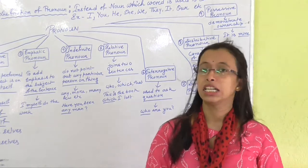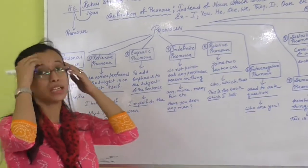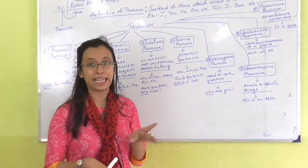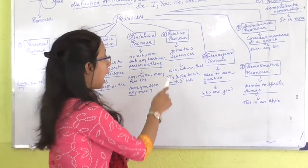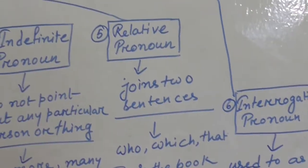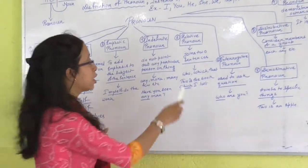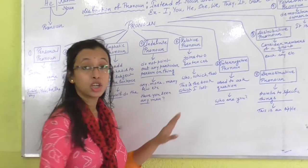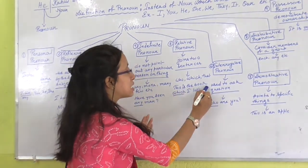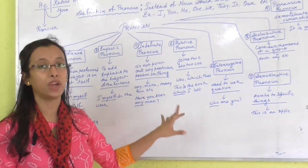Number five: relative pronoun. Relative pronoun actually works as a conjunction — it joins two sentences. Examples are: who, which, that. In the sentence 'This is the book which I lost', 'which' is a relative pronoun because it joins the two sentences 'This is the book' and 'I lost it'.